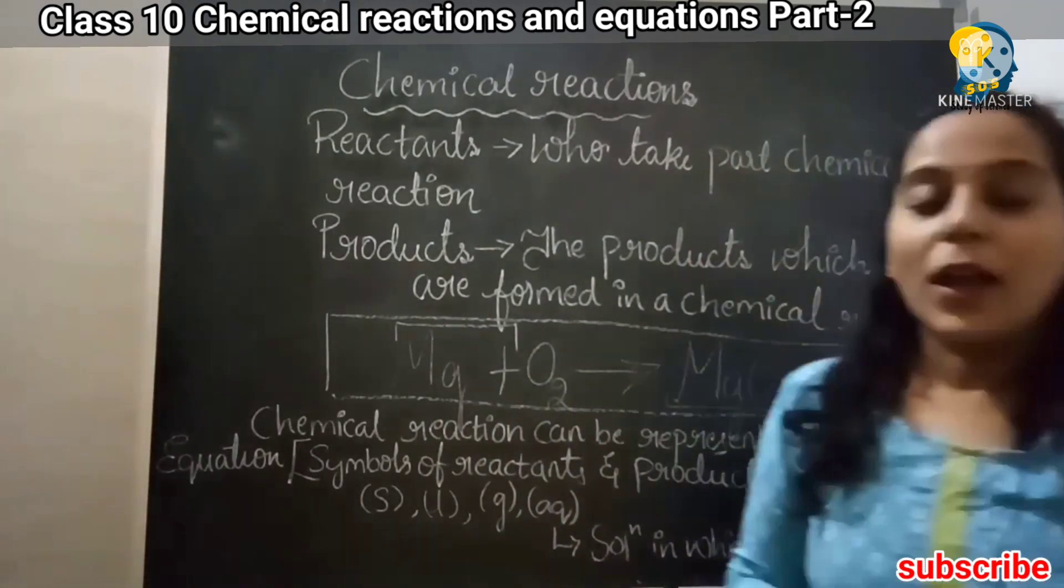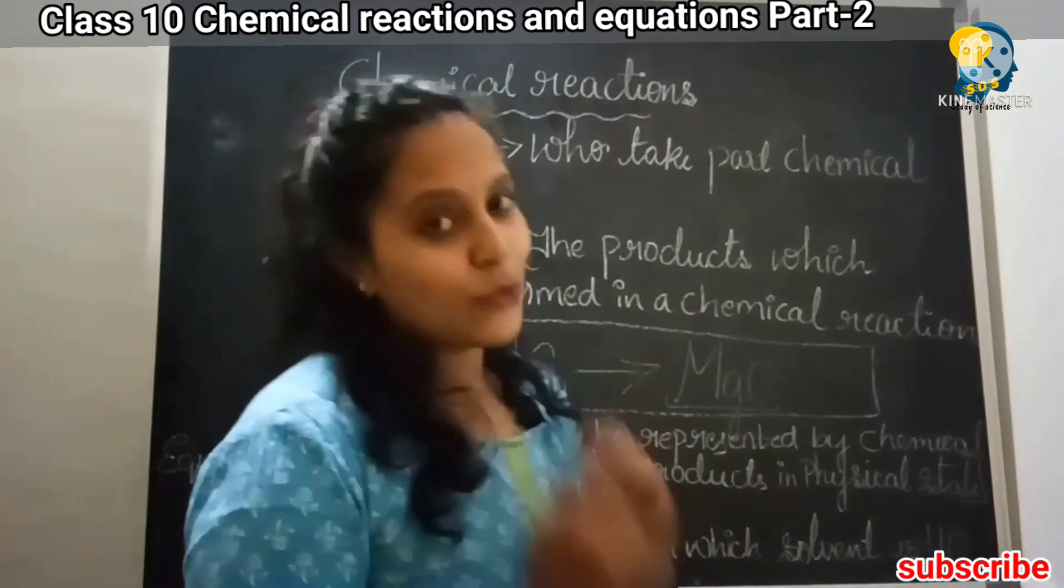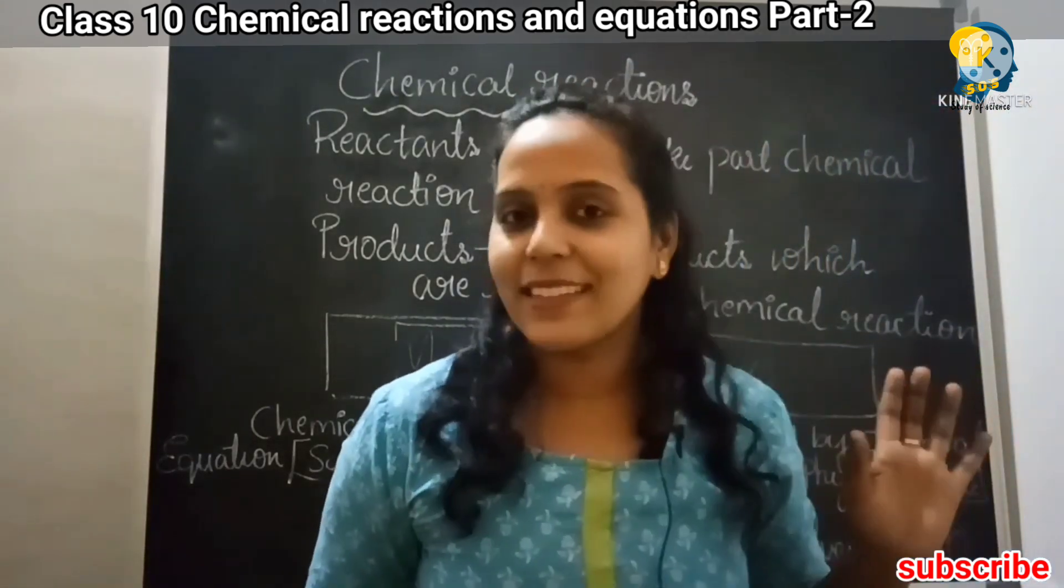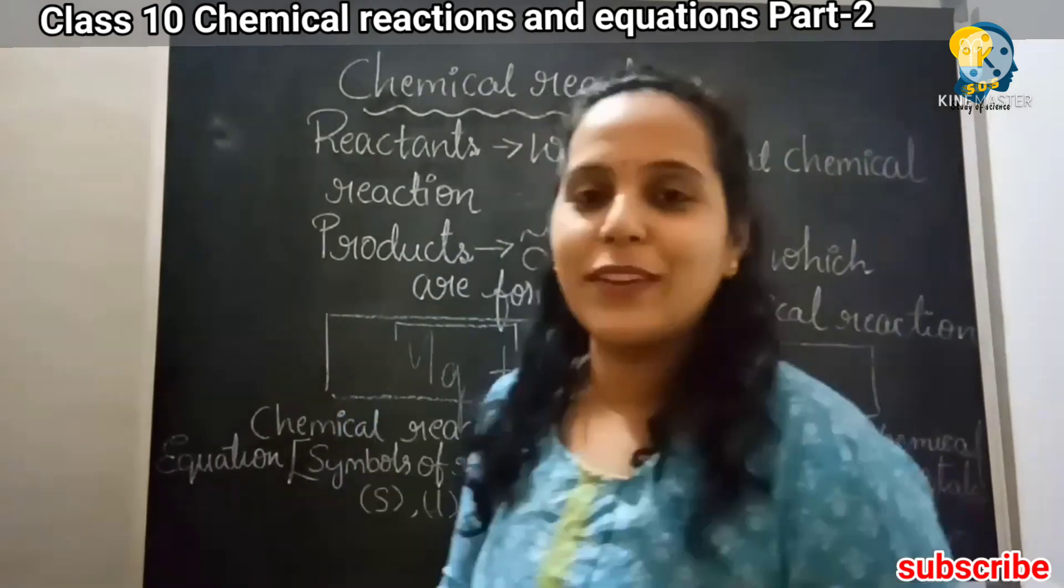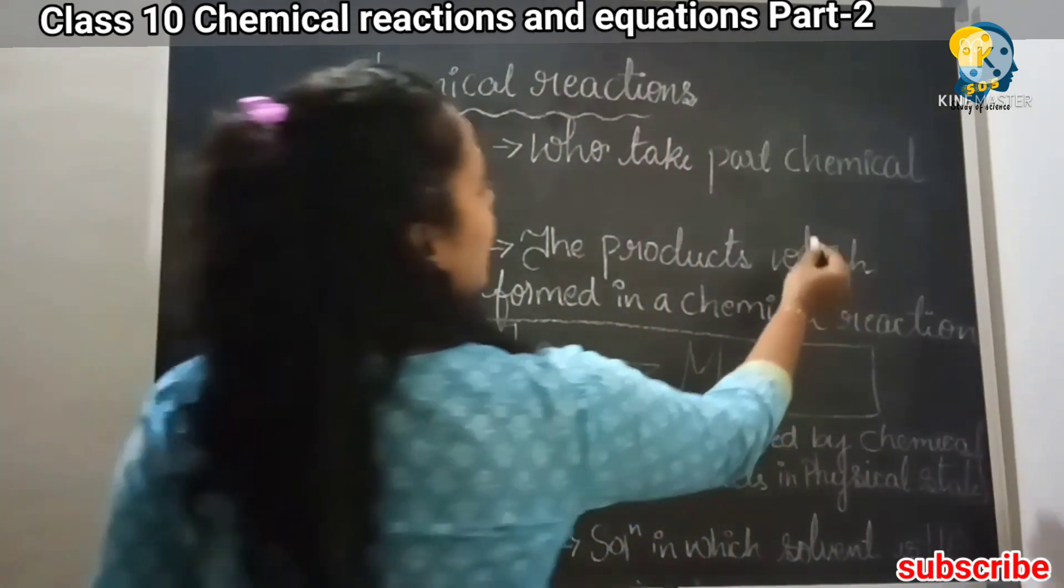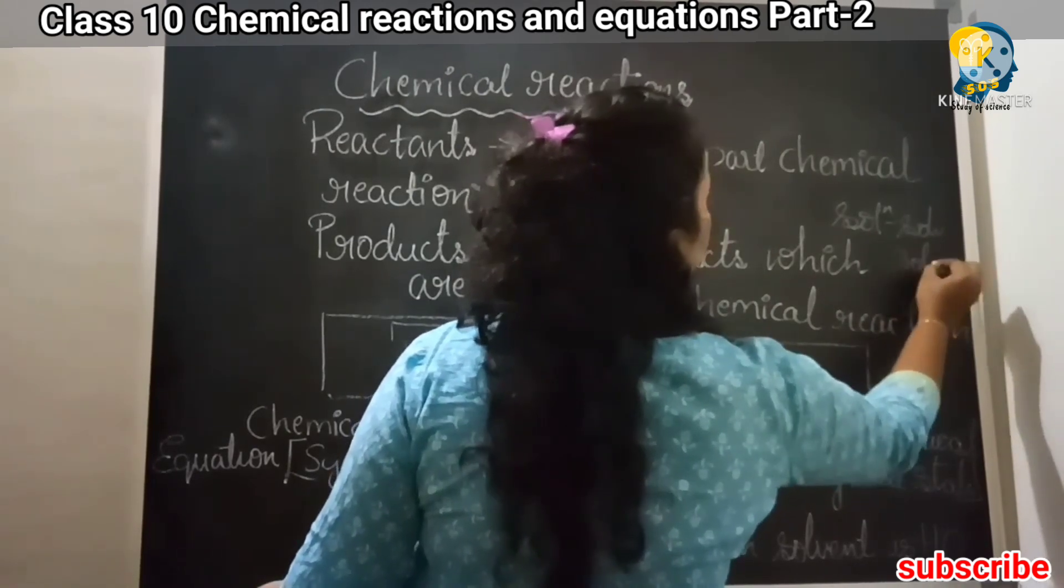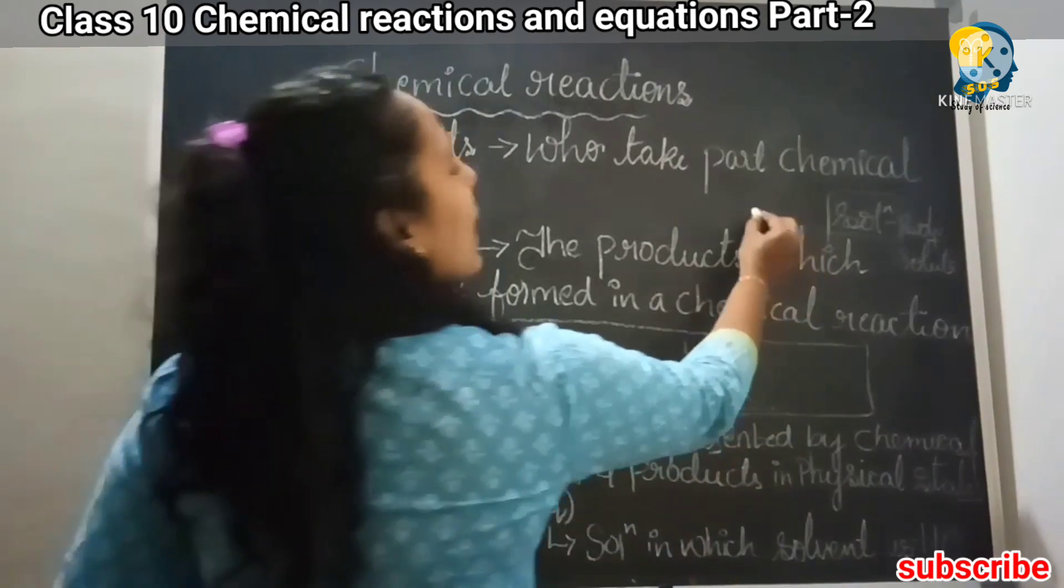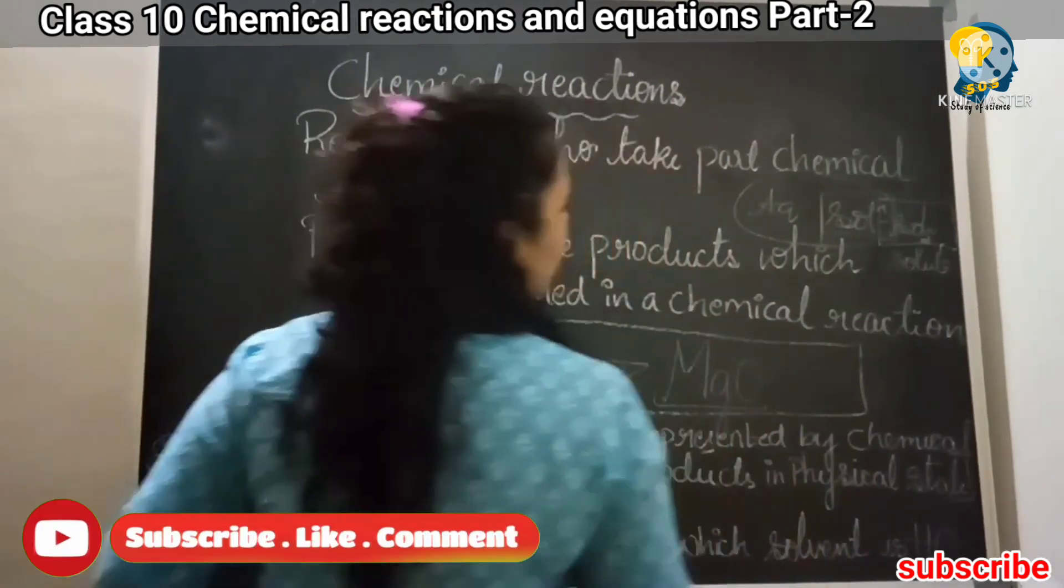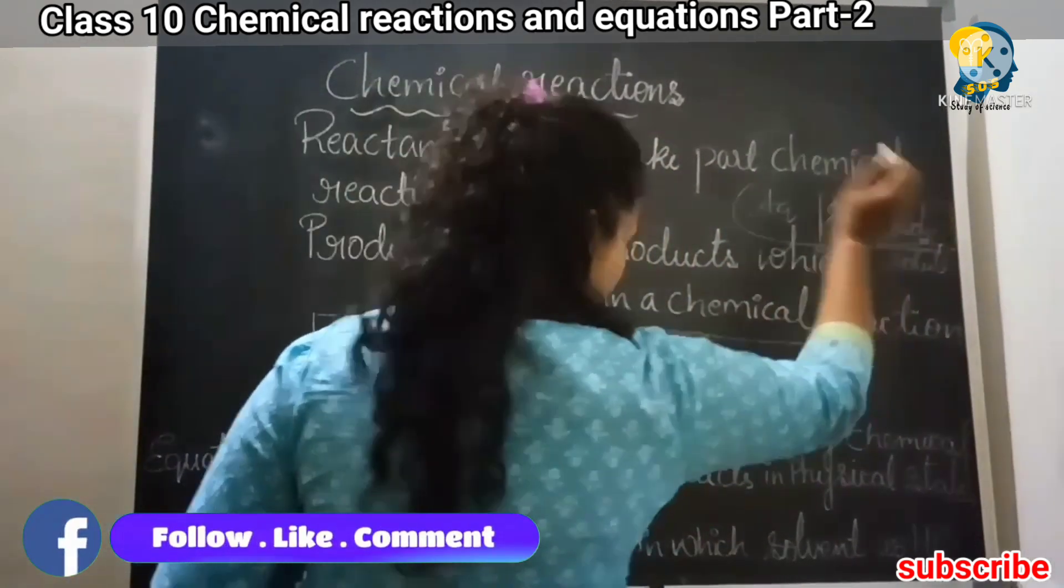In a chemical equation, we can find the reactants as well as products, as well as their physical state. Whether the substance is solid, liquid, gaseous, or aqueous in state. What is aqueous? Aqueous solution is a solution where the solvent will be the water. If we say solution, there is solvent and there is solute. Solute plus solvent gives rise to a solution. Aqueous solution is nothing but a solution where the solvent will be the water.